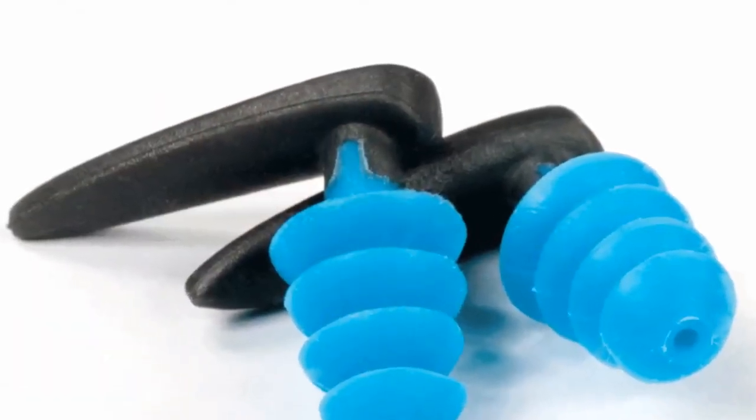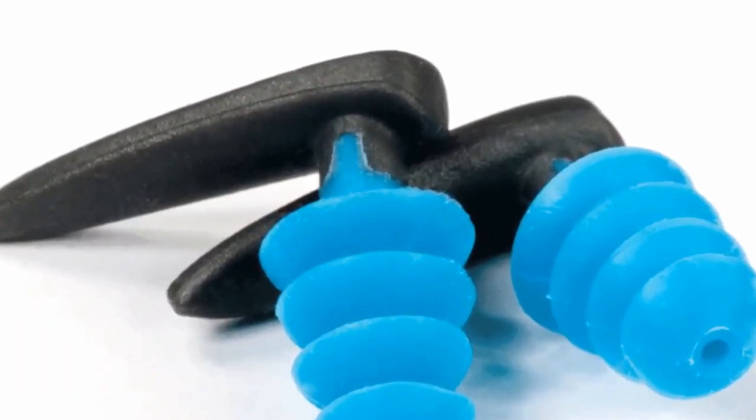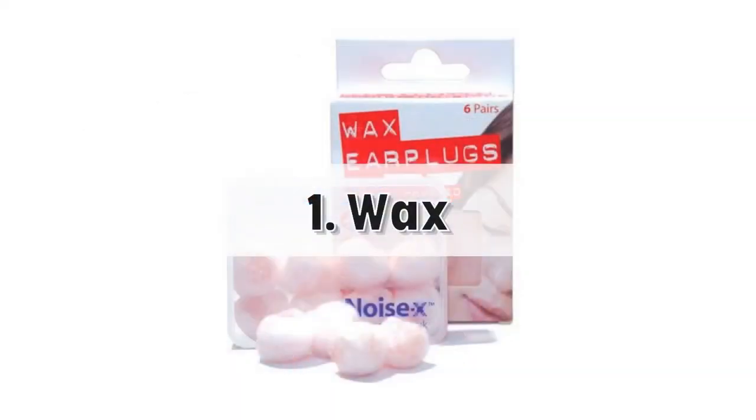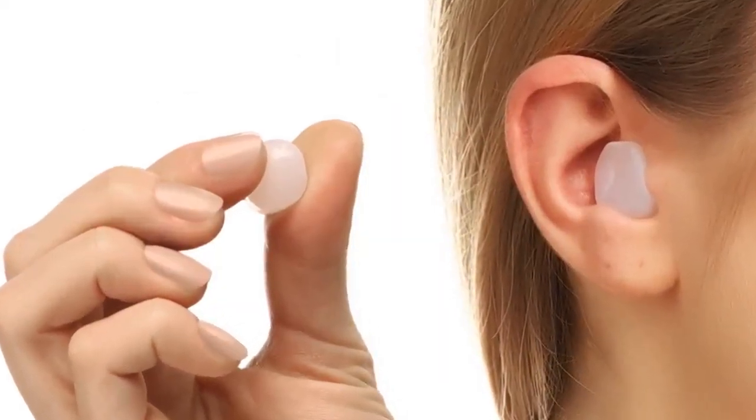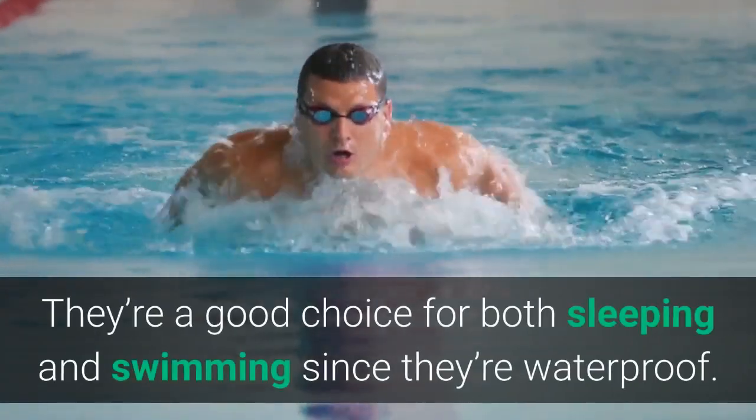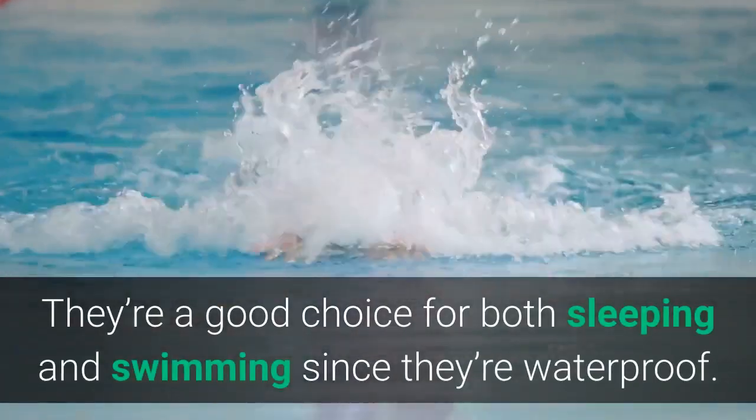In addition, earplugs are usually categorized into three types according to their material. First, wax. Wax earplugs are easy to mold to the size of your ear. They're a good choice for both sleeping and swimming since they're waterproof.